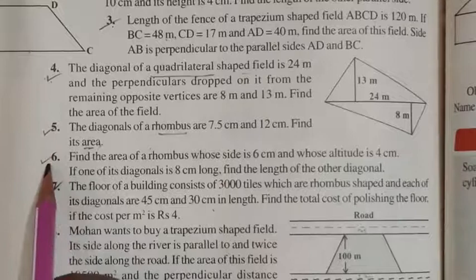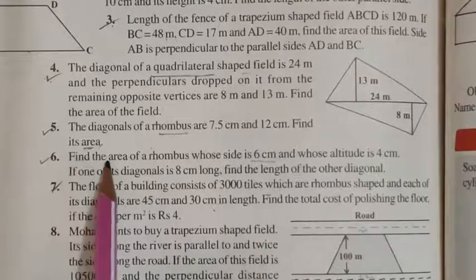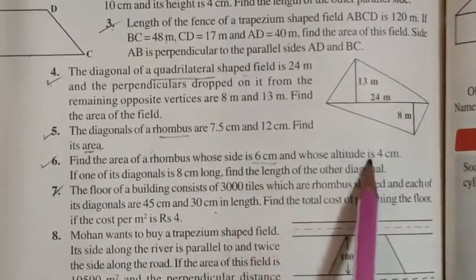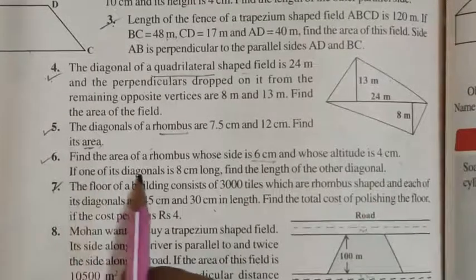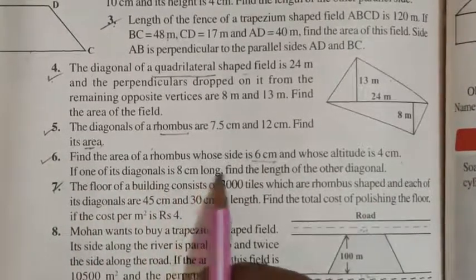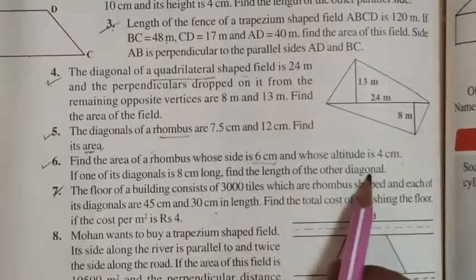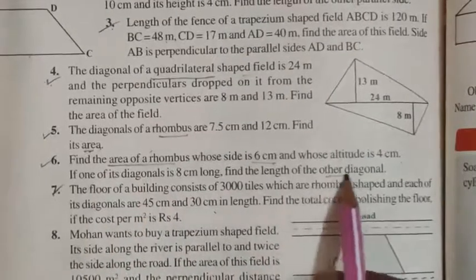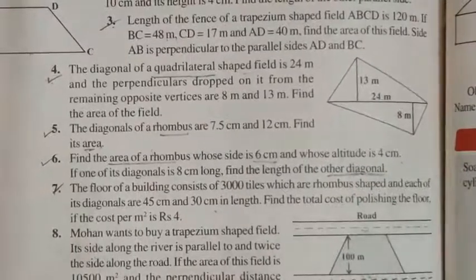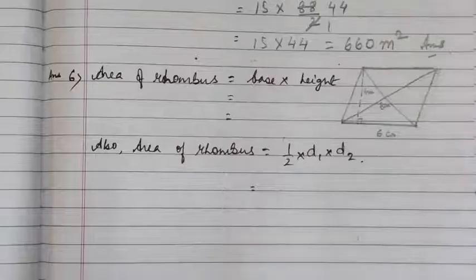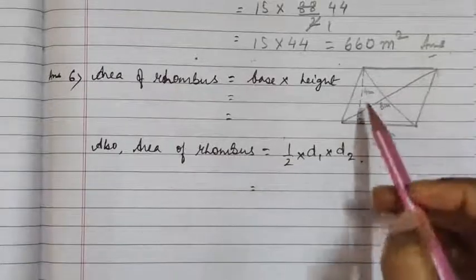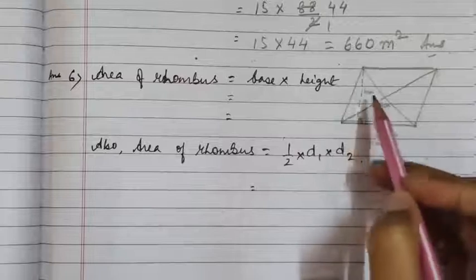In question number 6 it says: find the area of a rhombus whose side is 6 cm and whose altitude is 4 cm. If one of its diagonals is 8 cm long, find the length of the other diagonal. So we have to find the area of the rhombus and then find one of the diagonals. The side of the rhombus is given as 6 cm and the altitude, that is the height, is given as 4 cm.